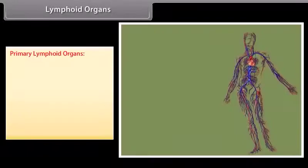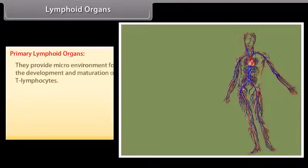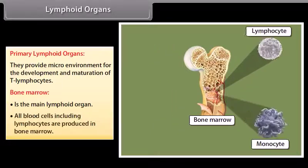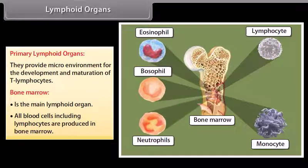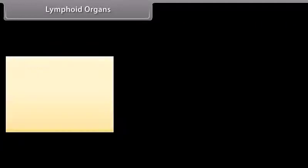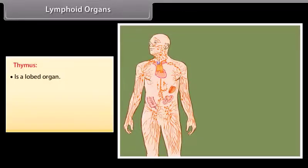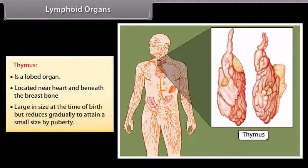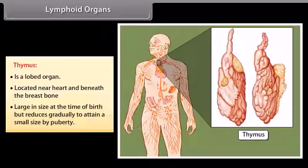Primary lymphoid organs provide a microenvironment for the development and maturation of T-lymphocytes. Bone marrow is the main lymphoid organ where all blood cells, including lymphocytes, are produced. The thymus is a lobed organ located near the heart and beneath the breastbone — large at birth but gradually reducing to a small size by puberty.